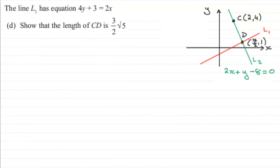In this part of the question we've got to find the distance CD between two points. This is a fairly common technique we should be familiar with. We were given the coordinates of C as being (2, 4), and we worked out in the previous part of the question that the coordinates of D were three and a half — or seven over two — and the y-coordinate was 1.